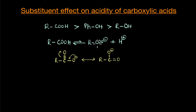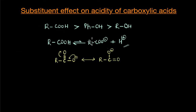The more stable the conjugate base is, the greater will be the tendency for the acid to undergo dissociation and produce H+ ions. When we talk about a substituent effect, any substituent that increases the stability of the conjugate base will increase the acidic character of the acid. And any substituent that decreases the stability of the conjugate base would have a negative effect on the acidic character.